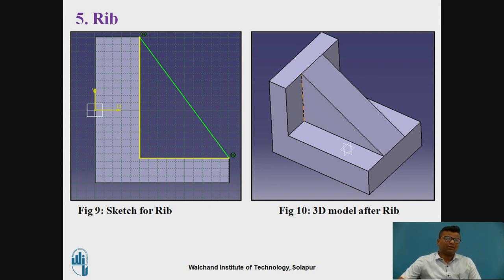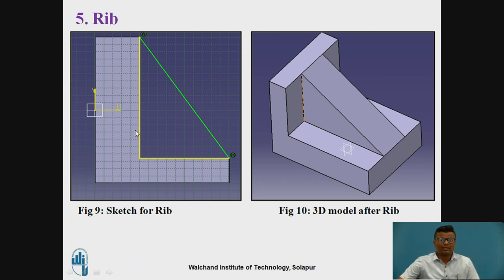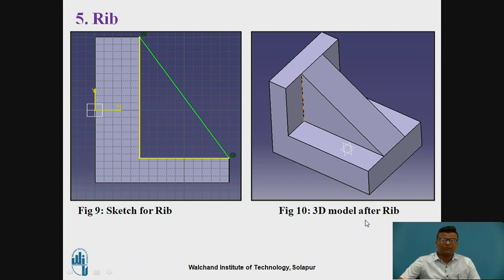Rib tool or rib feature-based modeling. This is the sketch you have to create — suppose you have one vertical surface and one horizontal surface, and you want a rib at the mid-section. You have to create a triangle here using 3D projection to create the two yellow lines. After that you create the connecting line, and when you select the rib section in 3D view, you get the rib 3D on the vertical and horizontal surface. This will be the sketch for the rib and this will be the 3D model after the rib section.